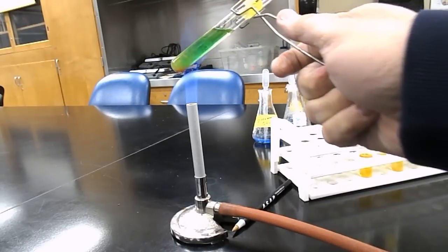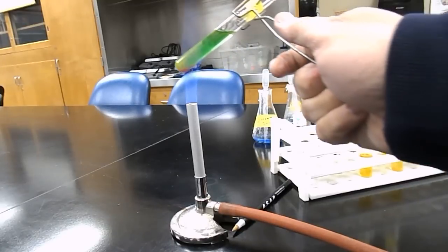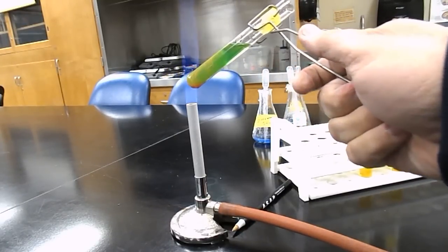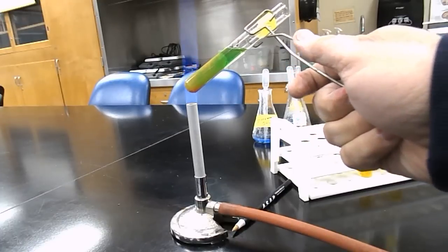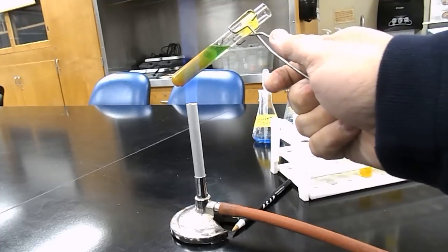We also want to make sure that the open end of the test tube is pointed in a safe direction. Notice the color change as the glucose content is being reduced by the reaction with Benedict's upon heating.